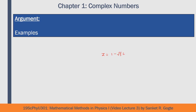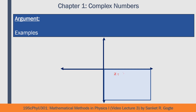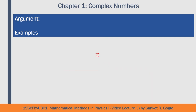For z equals 1 minus root-3 times i, the argument is tan inverse of minus root-3 divided by 1, which gives minus pi by 3 radians. Since the real part is positive and the imaginary part is negative, the angle lies in the fourth quadrant. So the argument can be written as minus pi by 3 radians (clockwise rotation) or equivalently as plus 5*pi by 3 radians (counterclockwise rotation).